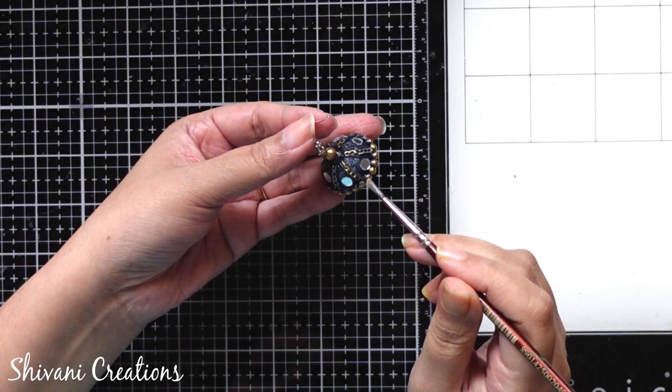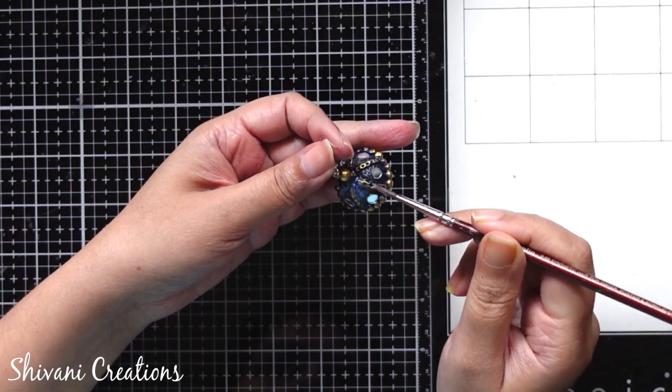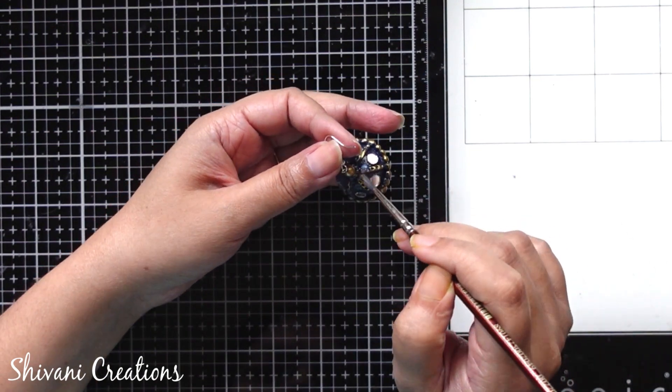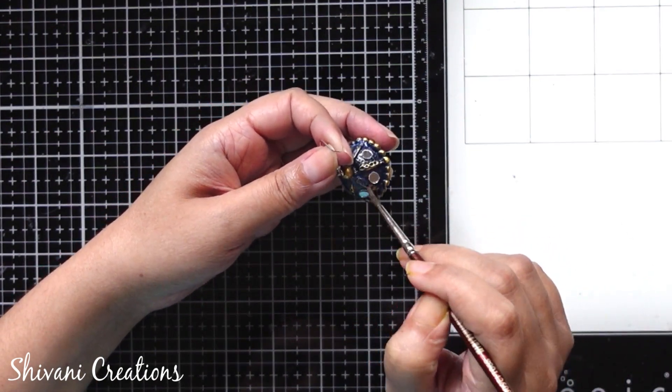Till that time I am just varnishing my jumka. Similarly I will varnish the clay finger ring as well to protect it permanently from water and moisture.